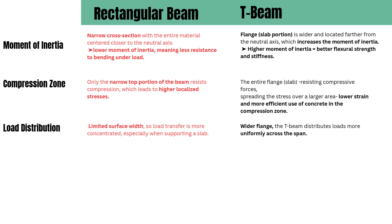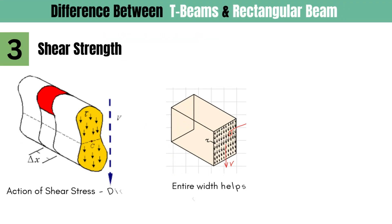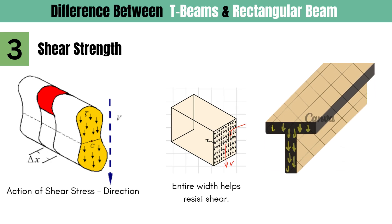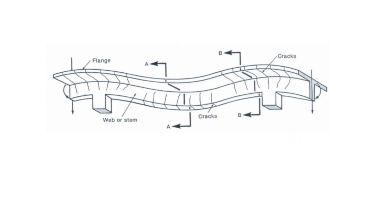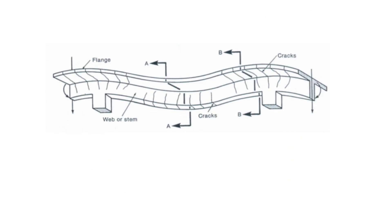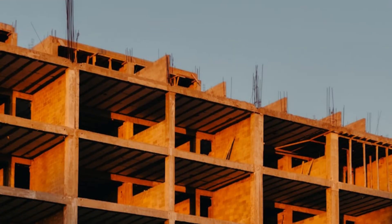The next difference concerns shear strength. While T-beams are superior in bending, they require more attention when designing for shear. In a rectangular beam, the entire width helps resist shear — its uniform cross-section makes shear resistance straightforward. But in a T-beam, only the web — the vertical stem — resists shear; the flange does not contribute to shear strength. This often means you need to add extra stirrups or shear reinforcement near the supports. So while T-beams win in flexure, they may need additional detailing for safe shear performance.